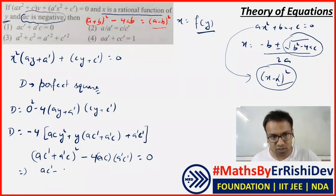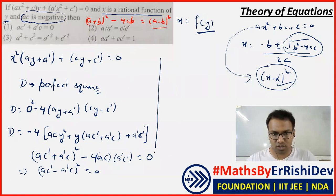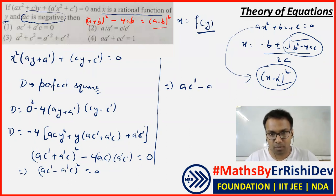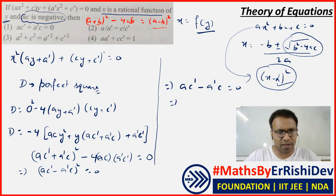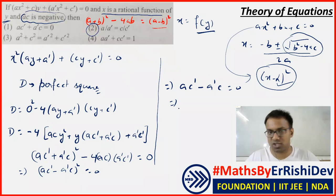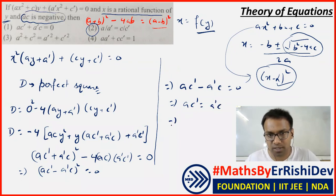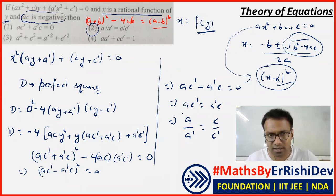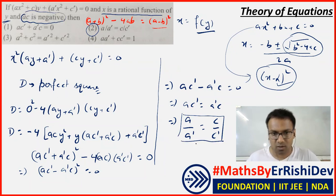So this expression becomes (ac' - a'c)² = 0, which means ac' - a'c = 0. Looking at the options, since the plus version isn't among them but option B with the minus is present, the second choice should be the answer. Please confirm — yes, that's correct. So option B: ac' - a'c = 0 is the answer.